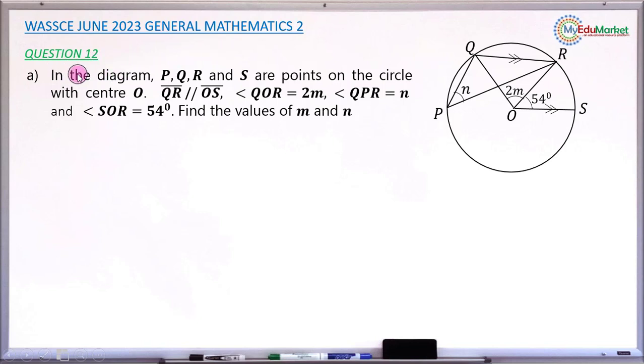We are answering question number 12a, and the question reads: In the diagram P, Q, R, and S are points on the circle center O.